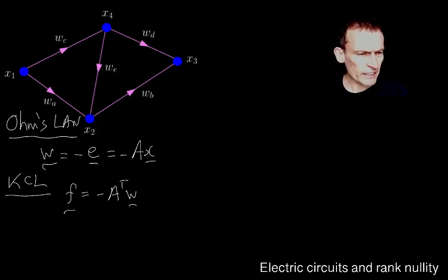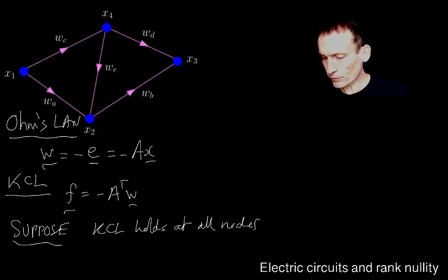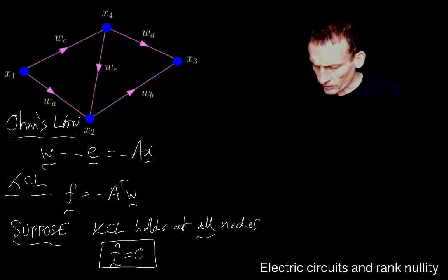So here's an idea. I'd like to start getting some intuition about circuits. So I can tell my friends, electrical engineering friends, something. Let's suppose that Kirchhoff's current law holds at all the nodes. In this case, there are four nodes. We're going to assume that the Kirchhoff current law holds at all of them, which means that f is identically zero vector. So there's zero divergence of the currents at all four nodes in this particular graph.